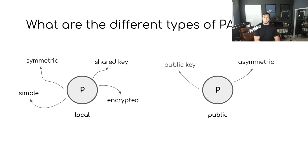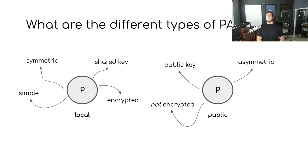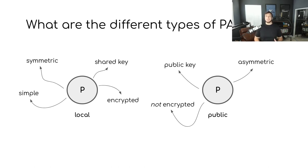Next there's the public PASETO. Public PASETOs are also referred to as asymmetric or public key PASETOs because of the type of cryptography they use. Public PASETOs are never encrypted — they are always signed. Both types of PASETOs are always signed, so they can always validate who created them. But because public PASETOs are never encrypted, any JSON data stored inside could potentially be public information. If an attacker gets a copy, they will be able to see whatever data is stored inside. Public PASETOs are also by their nature slightly more complicated than local ones.